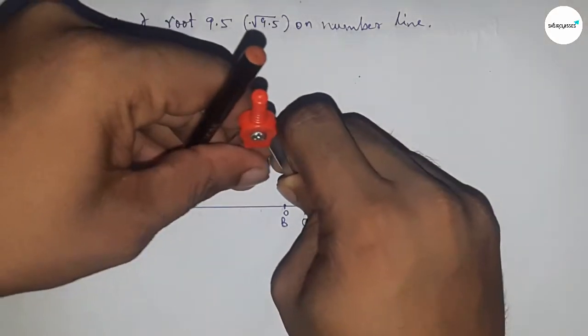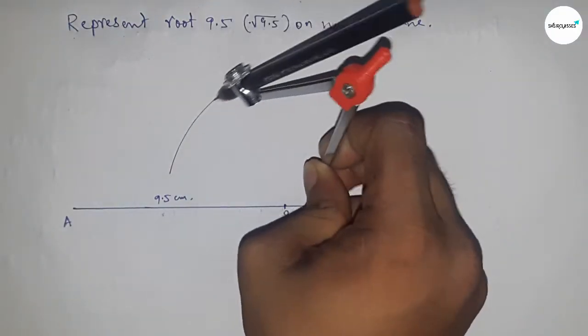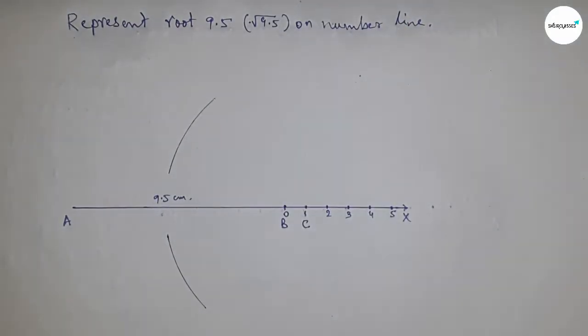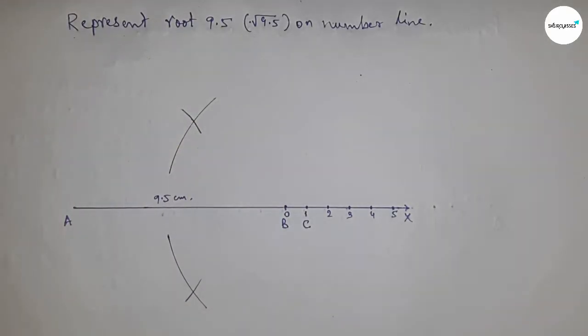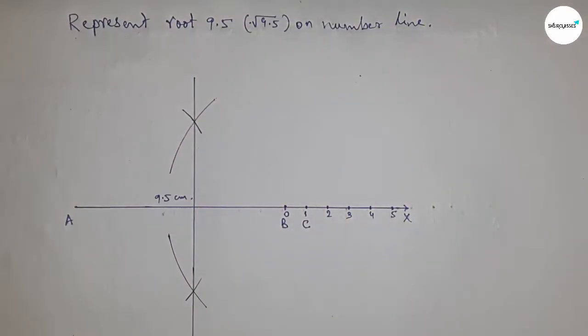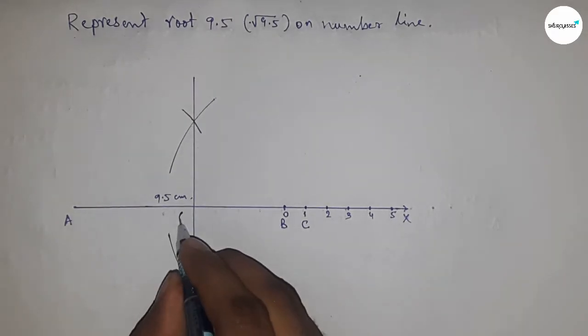Take a length greater than half of AC and draw arcs with the same length. Place the compass and cut the arc. Join these points, which meet at point O.